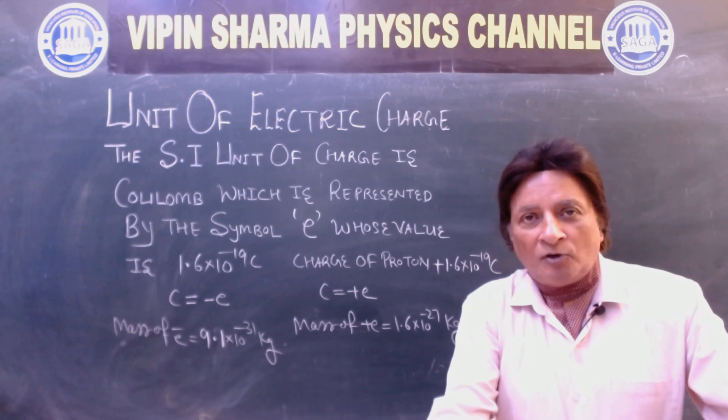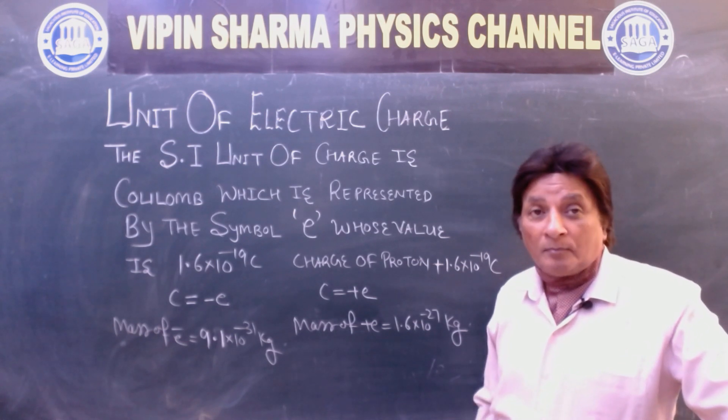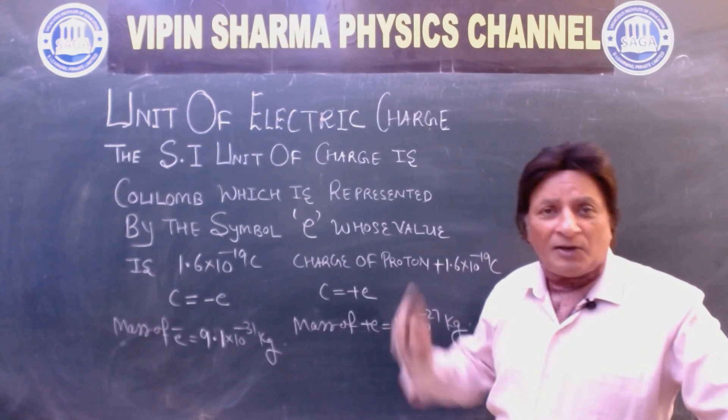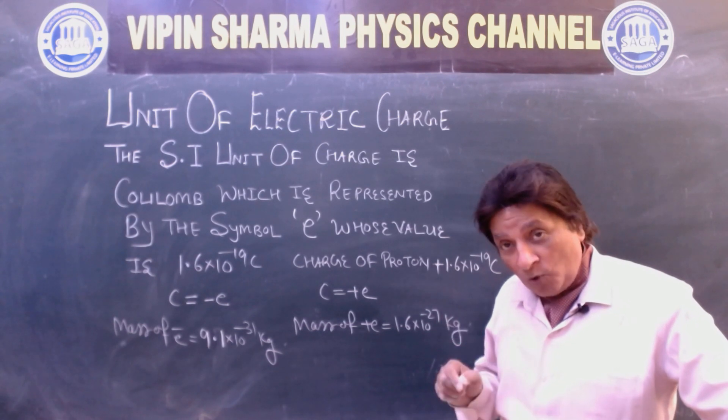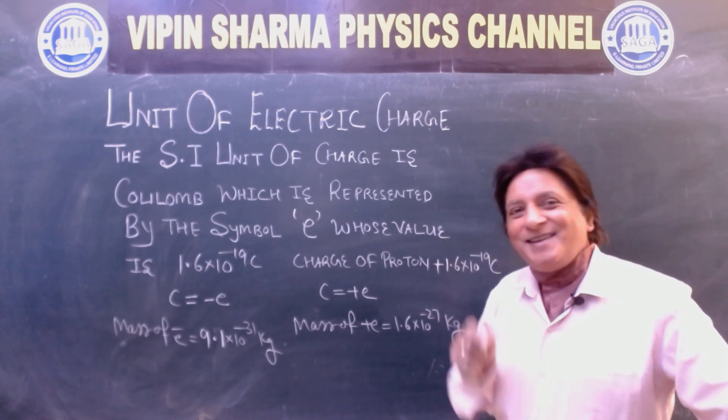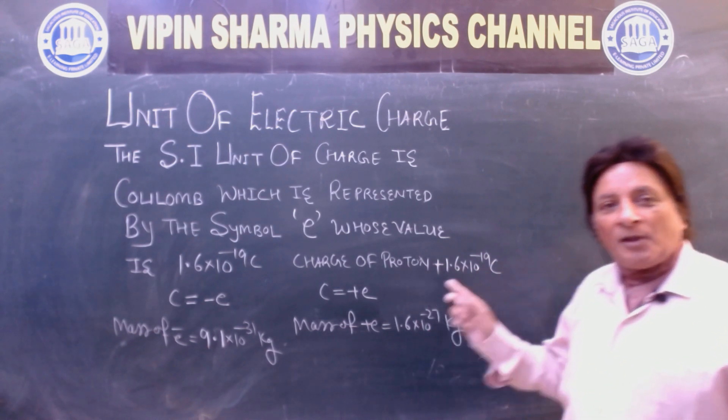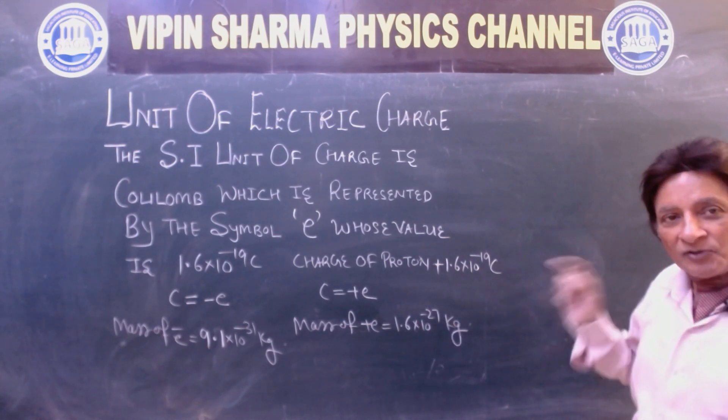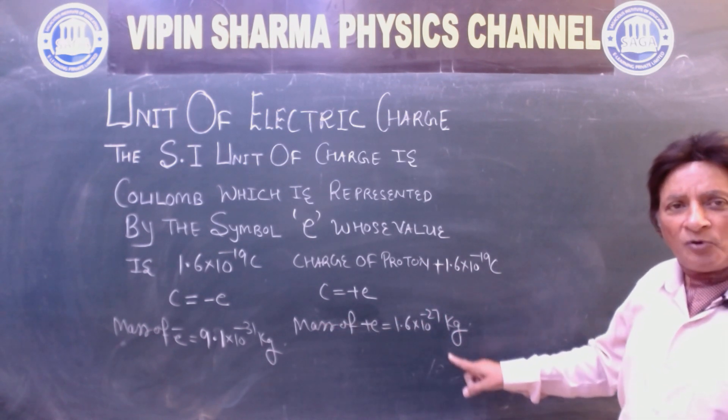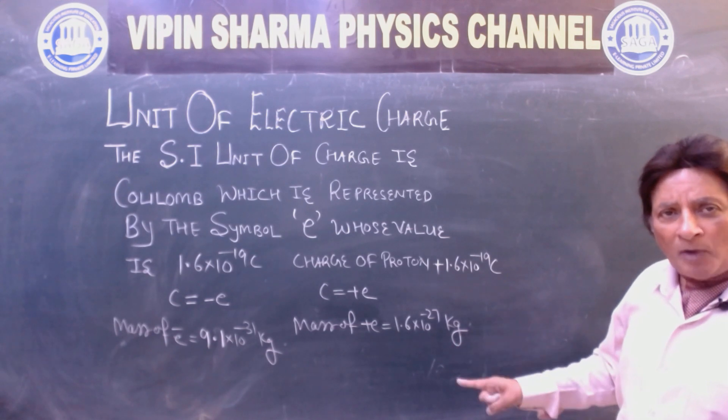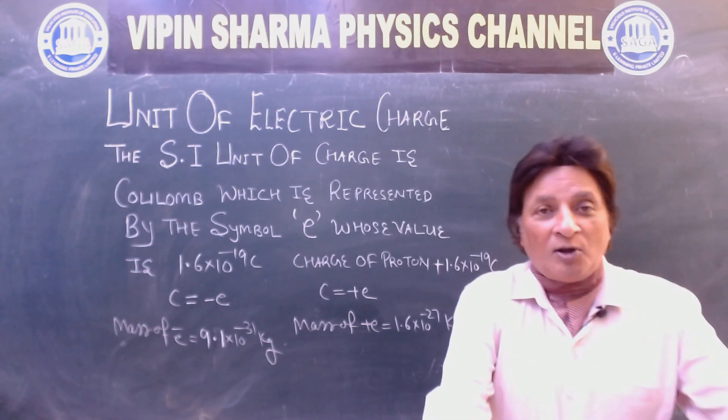Now students, unit of electric charge. The SI unit of charge is coulomb, which is represented by the symbol e. SI means Système International, international system of units, which is e, electron symbol, whose value is 1.6×10^-19 coulomb. Charge on proton is 1.6×10^-19 coulomb. e- equals minus e, e+ equals plus e. Mass of proton is 1.67×10^-27 kilogram, and mass of electron is 9.1×10^-31 kilogram.